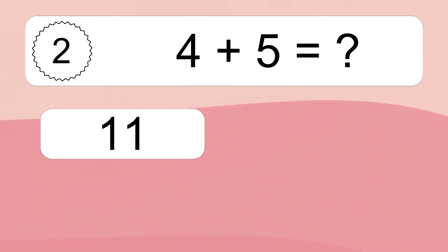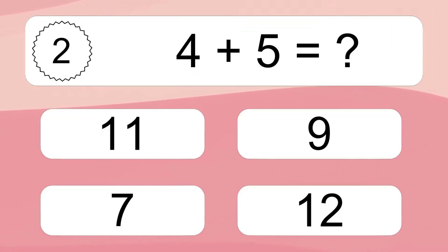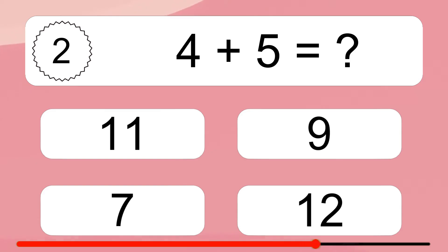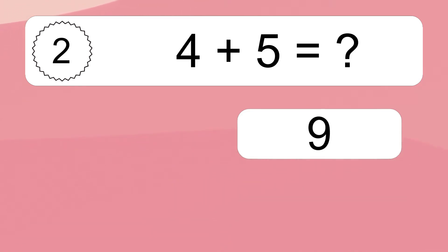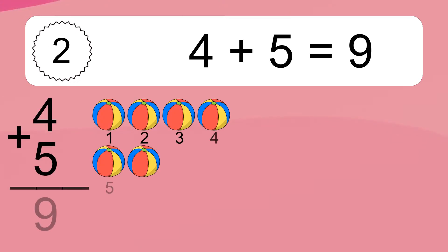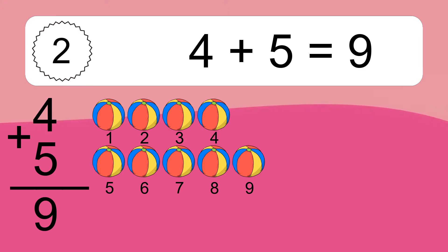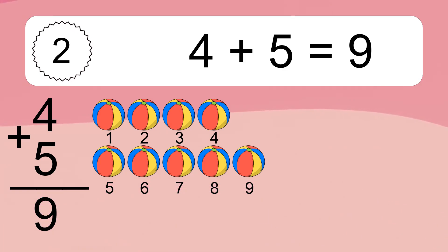4 plus 5 equals what? 4 plus 5 equals 9. Let's count it. 1, 2, 3, 4, 5, 6, 7, 8, 9.